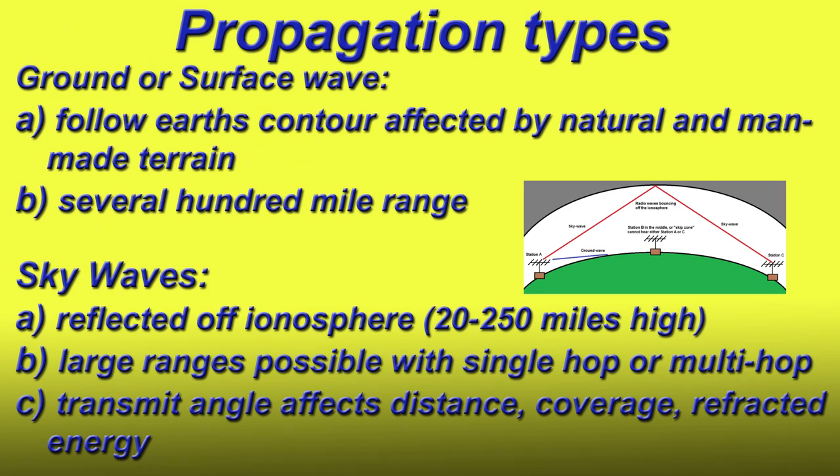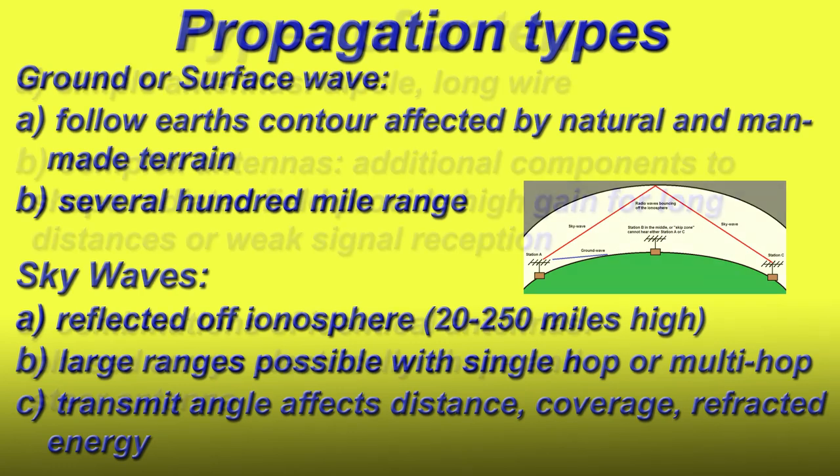Now let's touch briefly on propagation. There are basically two types of propagation: ground or surface wave, and sky wave. For the purpose of this video, we will mostly be talking about antennas that involve sky wave.